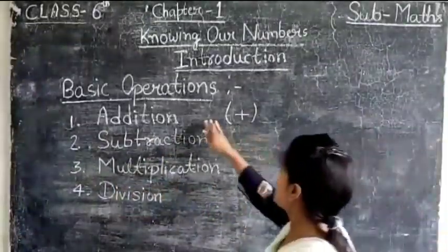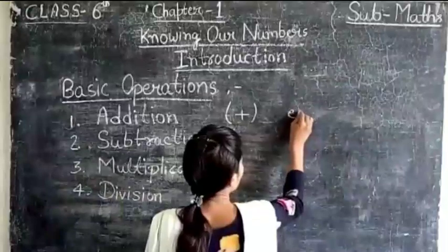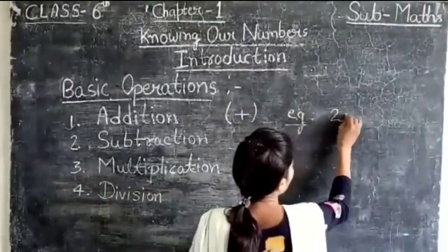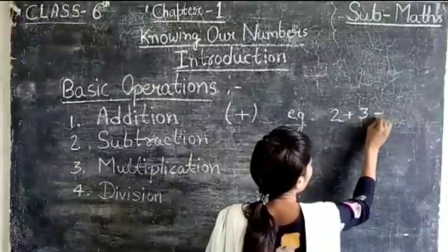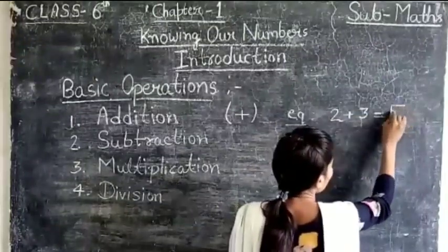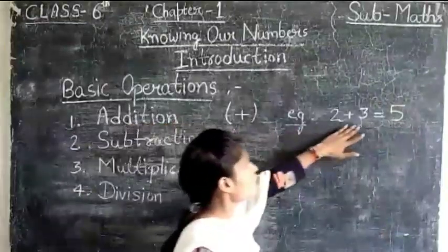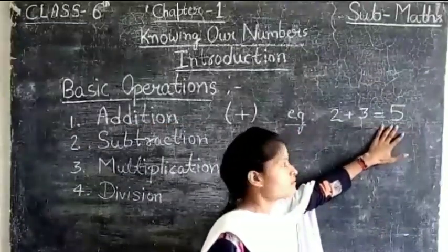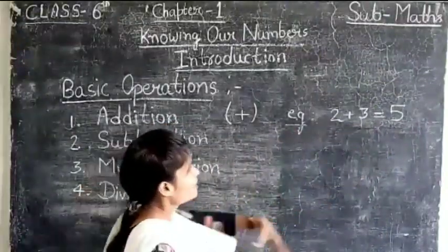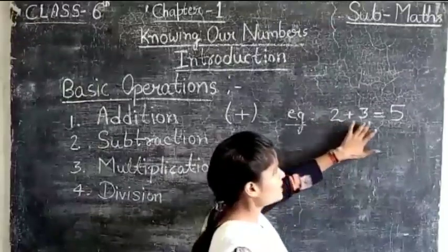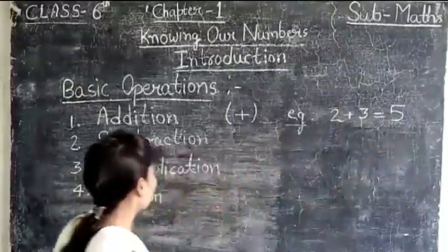Example of addition is 2 plus 3 equals to 5. That means addition of two numbers gives 5. Or the sum of 2 and 3 equals to 5.